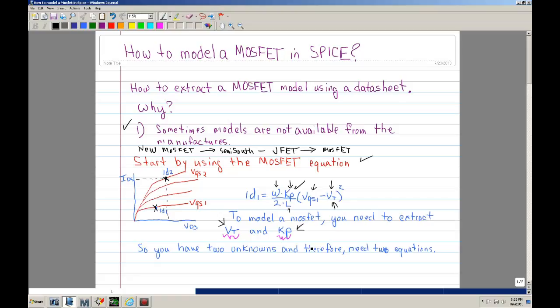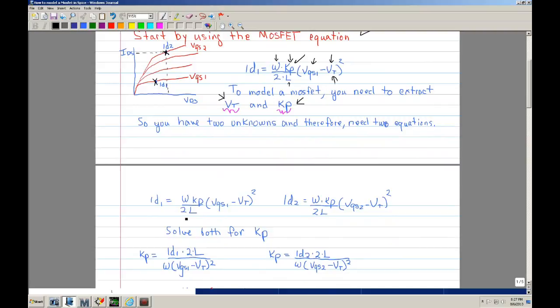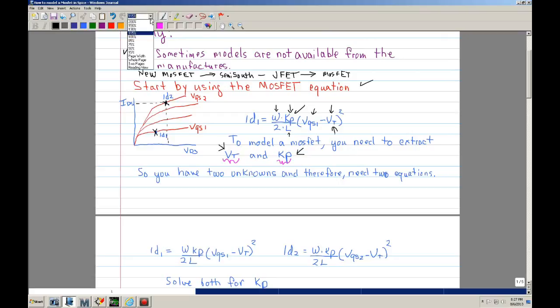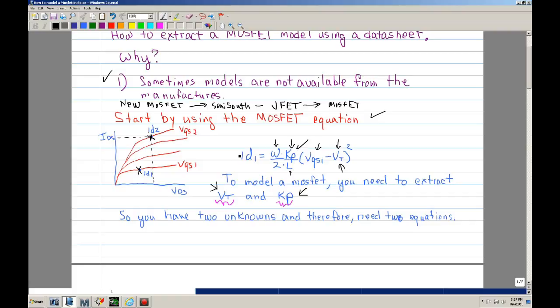So since you have two unknowns, then you need two equations. Looking at this equation, if you were to plot this equation, you'll get a family of curves that look like this. You'll have a VGS1, VGS2, and so forth. And if you use a curve tracer to measure your MOSFET, you'll get a family of curves like that. So this is available most of the time from your datasheet.